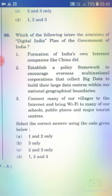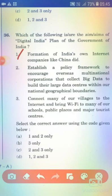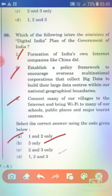Which of the following are the aims of the Digital India Plan of the Government of India? Statement 1: Formation of India's own internet companies like China did. Statement 2: Establish a policy framework to encourage overseas multinational corporations that collect big data to build their large data centers within India's geographical boundaries. Statement 3: Connect many villages to the internet and bring Wi-Fi to schools, public places, and major tourist centers. The right answer is Option B — 3 only.